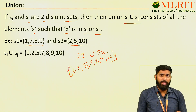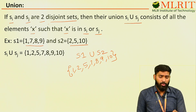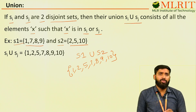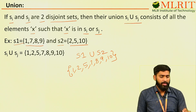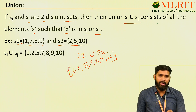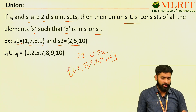So, what is the definition of union? If Si and Sj are two disjoint sets — here S1 and S2 — then their union S1 ∪ S2 consists of all the elements X such that X is in Si or Sj. Here X is {1, 2, 5, 7, 8, 9, 10}.